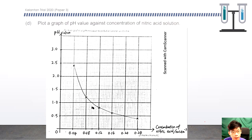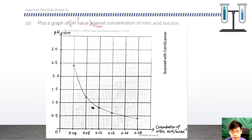Plot the graph of pH against the concentration of nitric acid. The one mentioned first — pH value — goes on the Y-axis. Concentration of nitric acid goes on the X-axis. No need to consider whether it is the manipulated variable or the responding variable for axis placement.